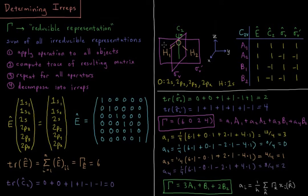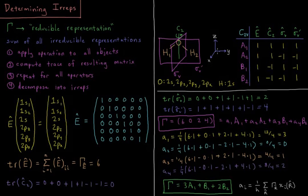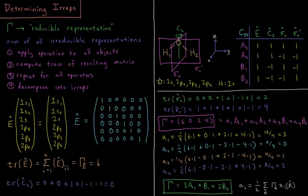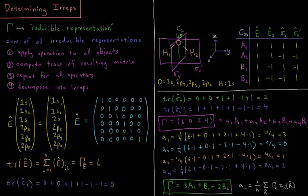The example we're going to give here is the water molecule, which has a C2V point group with principal axis C2 bisecting the bond angle. The plane of the molecule is the ZY plane, which is sigma V prime. Perpendicular to that and parallel to C2 we have sigma V, which is the ZX plane. We want to figure out the irreducible representations of our valence orbitals: the 2s of oxygen, 2pz, 2py, 2px, and the 1s orbitals of each hydrogen atom.